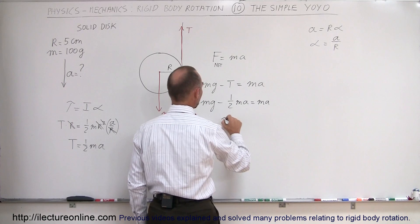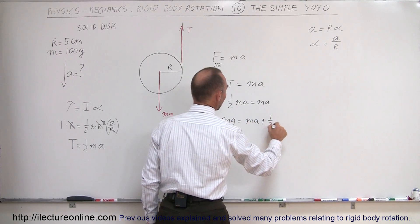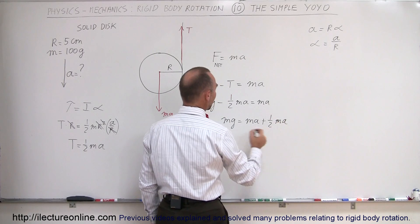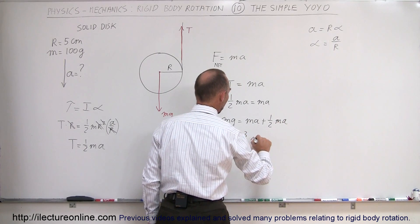Moving the one-half MA to the other side, we get MG equals MA plus a half MA, which together would be three-halves MA, so MG equals three over two MA.